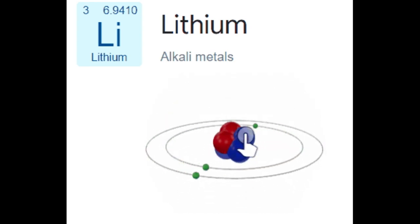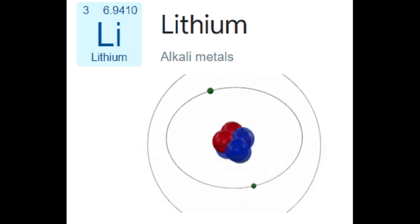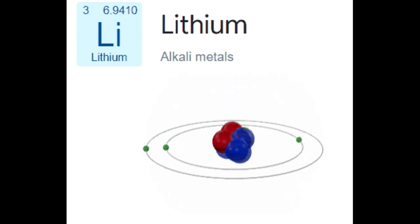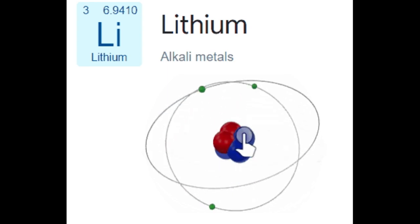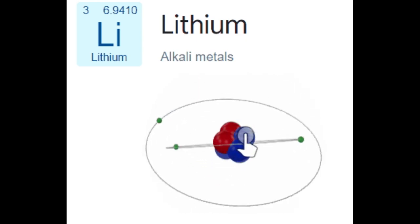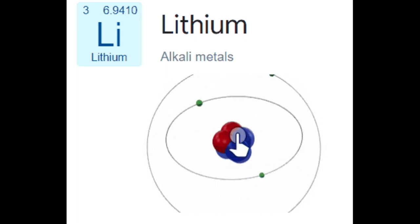Lithium and its compounds have several industrial applications, including heat-resistant glass and ceramics, lithium grease lubricant, and flux additive for iron, steel, and aluminum production. Lithium batteries and lithium-ion batteries consume more than three quarters of lithium production. Lithium is also used in the pharmaceutical and fine chemical industry in the synthesis of organolithium reagents, which are used as strong bases and as reagents for the formation of carbon-carbon bonds.